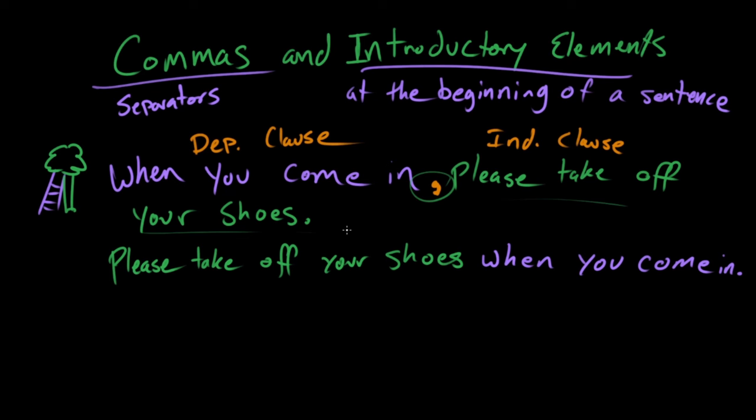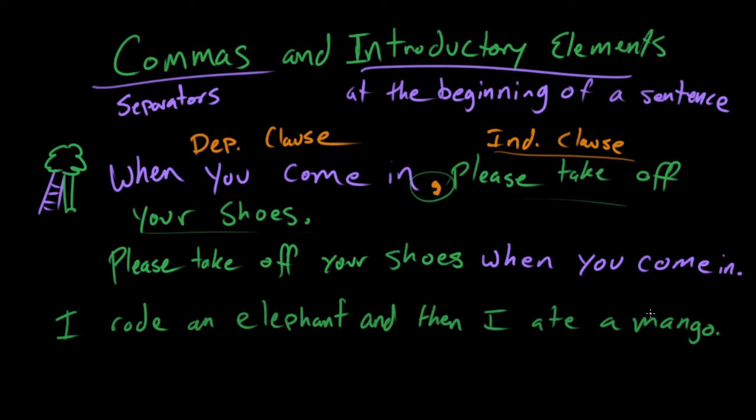And if you are uniting two independent clauses, in the following sentence, I rode an elephant and then I ate a mango, these two things are both independent clauses. I rode an elephant, then I ate a mango. These two things need to be connected by this conjunction and, but that's not all. They also need to be joined by a comma. Now you could also sub out if you wanted to, get rid of this comma and this and, and put in a semicolon, but that's a story for another time. So if you're uniting two independent clauses, just do comma and then a conjunction.